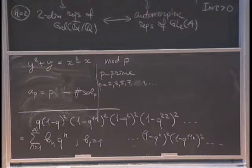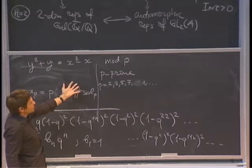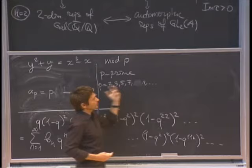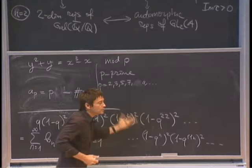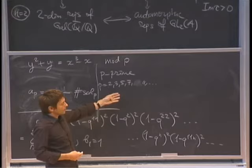This is absolutely astounding, because what could these two things possibly have to do with each other? You have an equation, you solve it for each of infinitely many primes and get some numbers. And yet the solution is given by one line — all of these numbers are encoded in that product formula. That is an example of the Langlands correspondence: it allows you to translate a question that looks infinitely complicated into one that looks manageable.